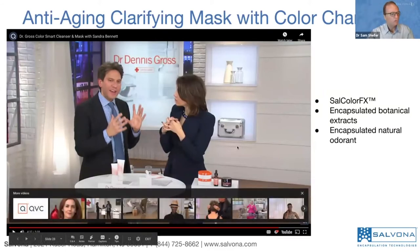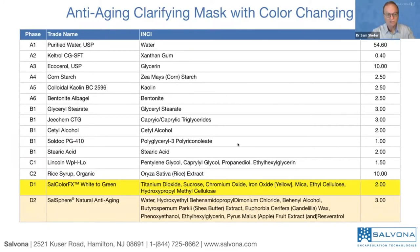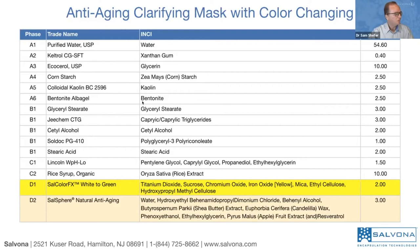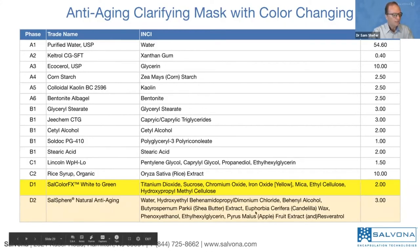That's how it was advertised with the color-changing technology. Now let me show you the formula. This is a mask and a cleanser — double function. The formula uses a water phase with xanthan gum as the thickener and some emollients. We use typical natural mask ingredients like kaolin and bentonite. Most importantly, we use SaliColor FX White to Green at 2%, and Natural Anti-Aging which uses shea butter as the matrix system and candelilla wax, containing the apple extract and resveratrol.